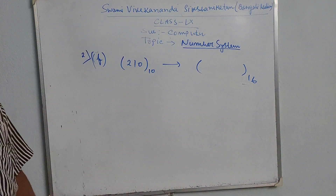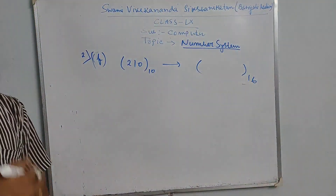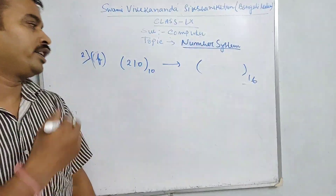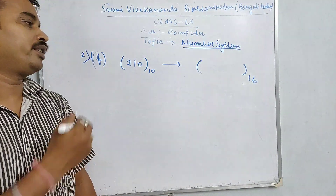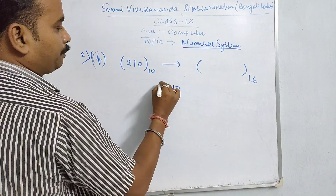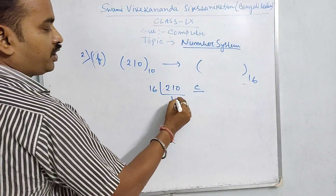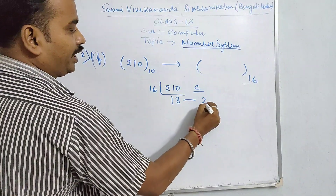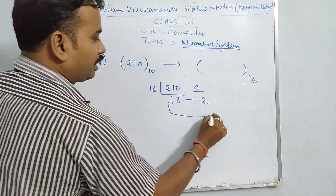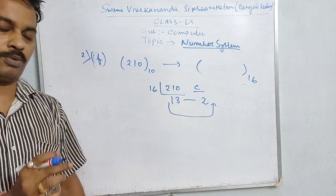We take the decimal number 210 and divide by 16. 210 divided by 16 gives 13 remainder 2. So the remainder is 2. Next, 13 divided by 16 is not further divisible, giving us 13. In hexadecimal, 13 is represented as D.